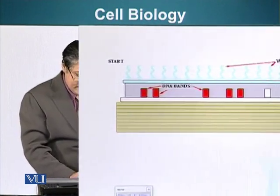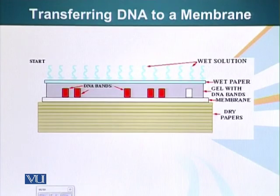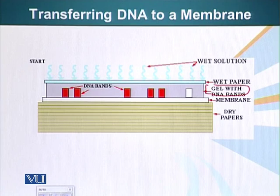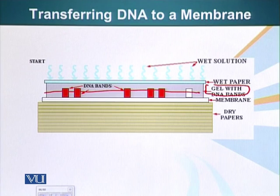There is a special technique to do that. First of all, we have our gel with DNA bands in it. We are seeing these bands but actually the DNA is continuous throughout, so we are going to transfer all this DNA to a membrane. It is a special membrane because once DNA is transferred to it, it will stay stuck and it will allow us to analyze that DNA.